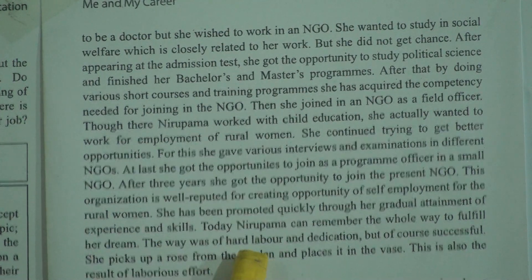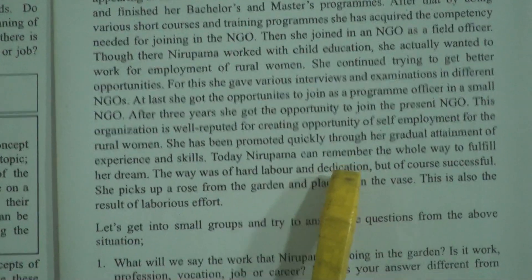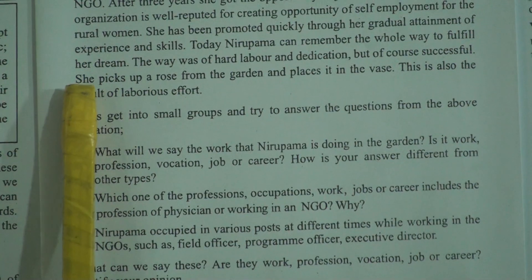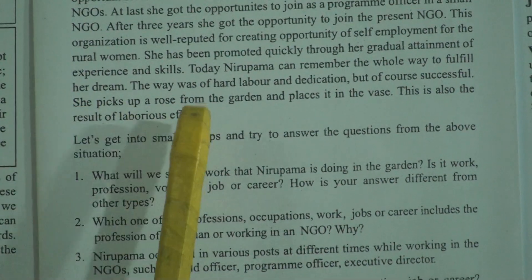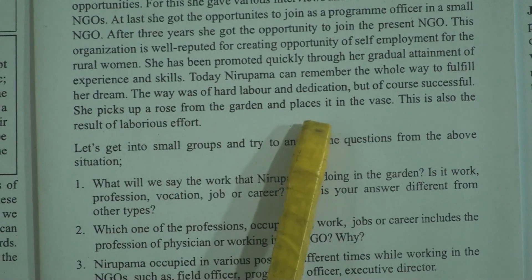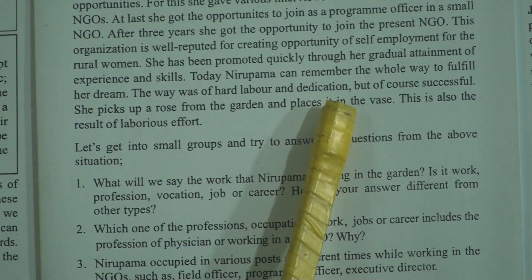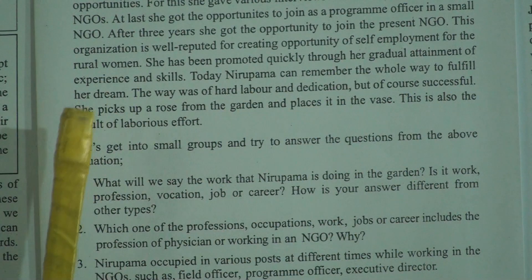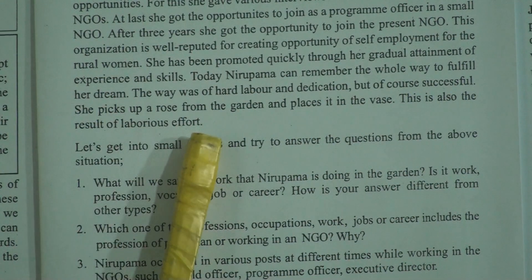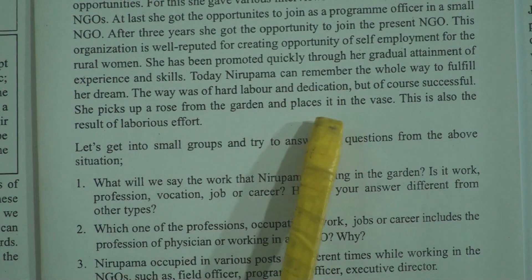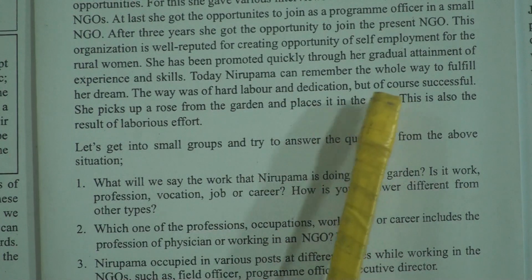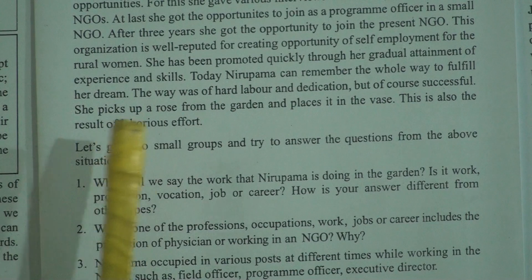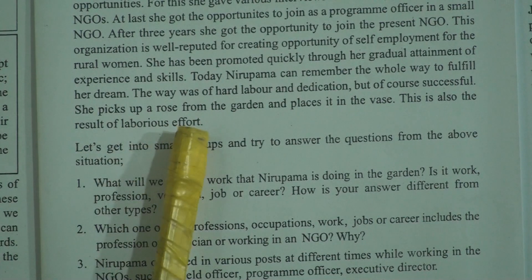Today, Neu Poma can remember the whole way to fulfill her dream. The way was of hard labor and dedication, but of course successful. She picks up a rose from the garden and places it in the vase. This is also the result of laborious effort.